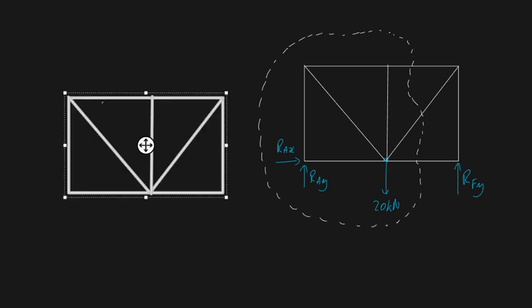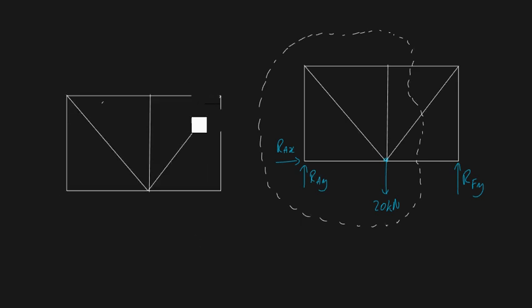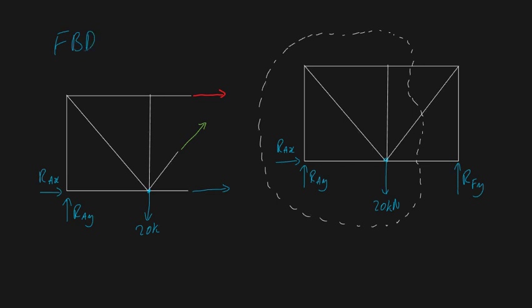We trick the section into thinking it's still connected by drawing external forces. The section looks like this once ripped off. We have an external force along one member, a force parallel to another bar, and a component force in a third direction. You might ask how we know their direction — we assume tension; if the magnitude comes out negative, it means the member was always in compression. We also include the external support forces RAY, RAX, and the 20 kN load. This gives one free body diagram for the left-hand section.